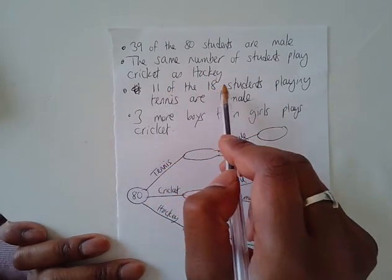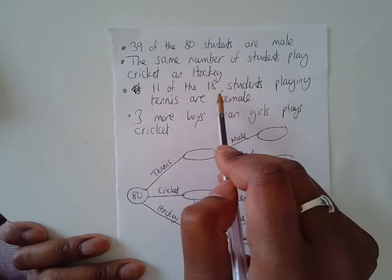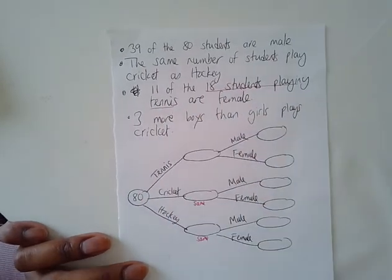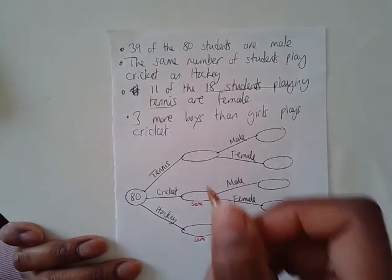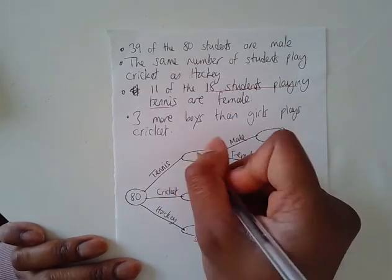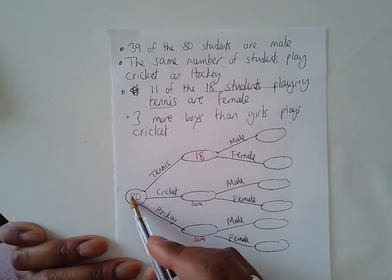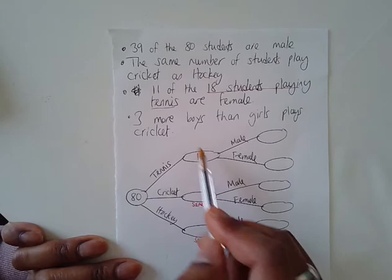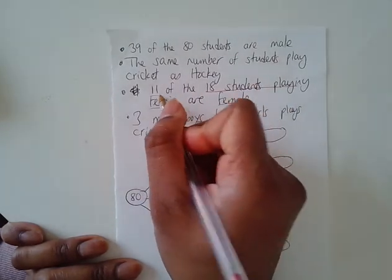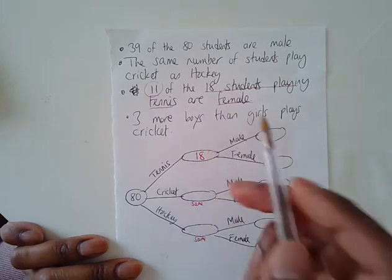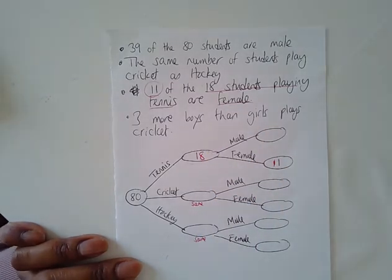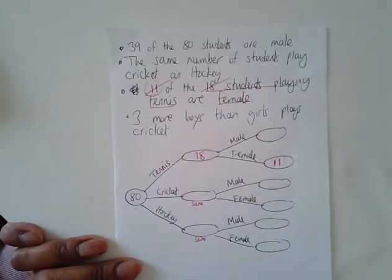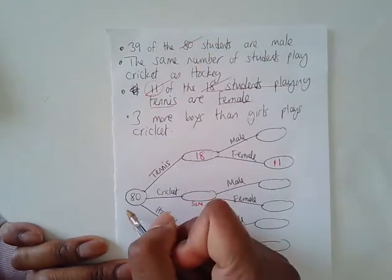11 of the 18 students playing tennis are female. So if I just underline this, 18 students playing tennis, that's how many people play tennis. So I'll put the 18 over here. 18 students playing tennis. Tennis, 18. But 11 of those, 11 of those are actually females. 11 of these are females. So put the 11 there. So I've dealt with this number, dealt with that number. Eighty's right there.